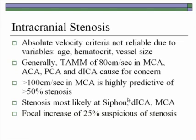For intracranial stenosis, absolute velocity criteria are not reliable due to variables of age, hematocrit, and vessel size. However, generally a mean of 80 cm/s in the MCA, ACA, PCA, or distal internal carotid is cause for concern and would probably warrant other assessments. Greater than 100 cm/s in the MCA is highly predictive of greater than 50% stenosis. Stenosis is most likely to occur at the siphon, the distal internal carotid where it bifurcates, and the MCA. A focal increase of 25% is suspicious for stenosis compared to proximal and distal areas and the contralateral side.